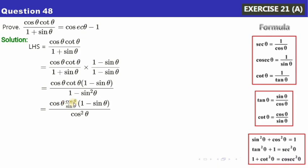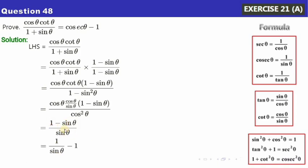In the denominator we have cos²θ, and in the numerator we also have cos²θ (from cosθ times cosθ/sinθ). The cos²θ cancels, leaving (1 minus sinθ)/sinθ. Separating the fraction: 1/sinθ minus sinθ/sinθ = cosecθ minus 1. That is exactly what we wanted to show. You may pause and note down the solution.